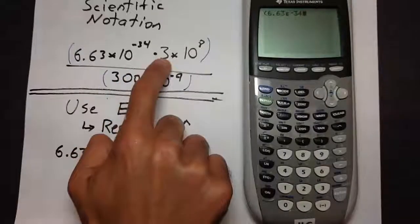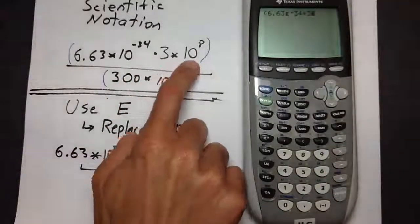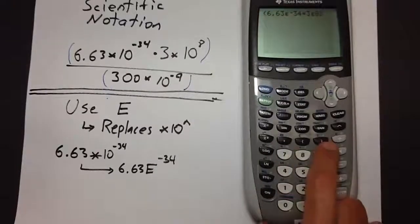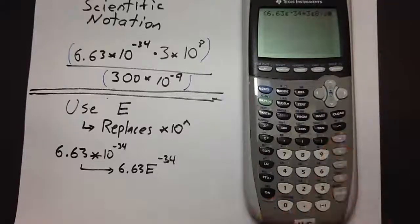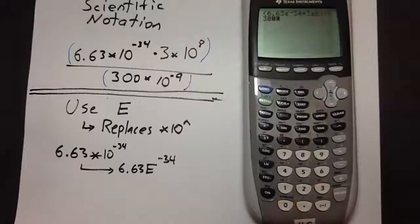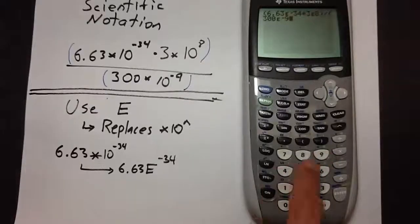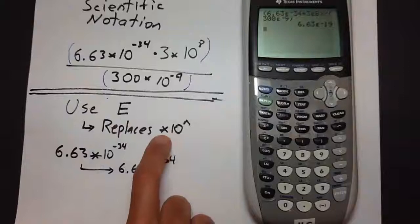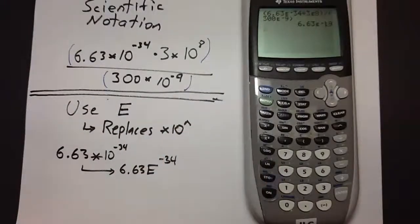Continue: times 3, then 2nd, uppercase E, 8. Close the parentheses, then a division sign for the denominator. Open parentheses again, and for 300 times 10 to the negative 9th, say uppercase E, then negative 9. Close the parentheses and press enter. We get 6.63 E negative 19. Once again, uppercase E is the same as times 10 raised to whatever comes next. You're okay to enter that answer in WebAssign or on an exam — your instructor will know exactly what you mean.